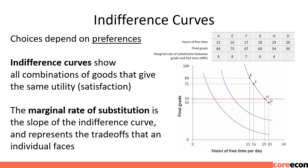Looking at points on an indifference curve such as A, E, H, and D, between which we are indifferent: at point A we have a grade of 84 and 15 hours of free time; at E, 75 for a grade and 16 hours of free time; at H, a grade of 54 with 19 hours of free time; and at D, a grade of 50 with 20 hours of free time. The marginal rate of substitution is how much we are willing to sacrifice for an extra hour of free time. Going from A to E, we give up 9 points — from 84 to 75 on the final grade. At H, the MRS is 4. The MRS is falling as we move down the curve.